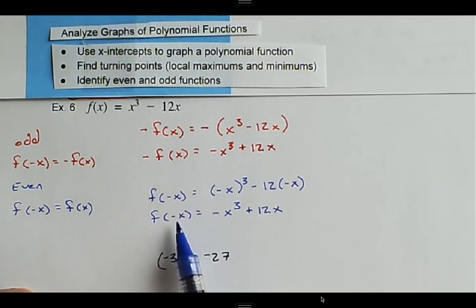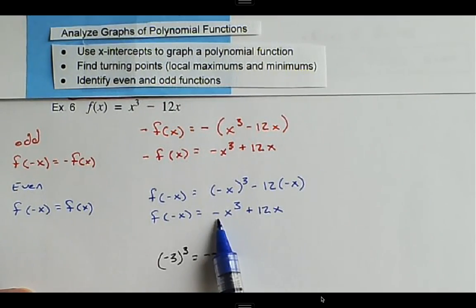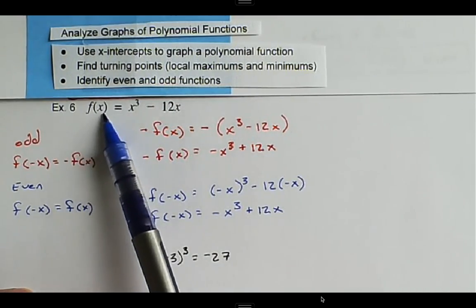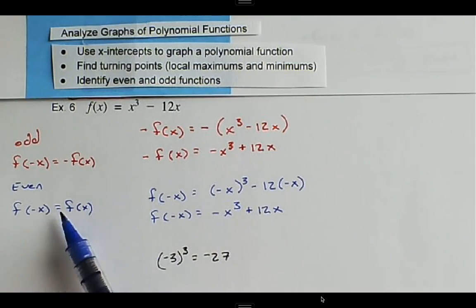and the function evaluated at -x, the lead coefficient is also negative. So neither one of them match the original function, so it cannot be even.